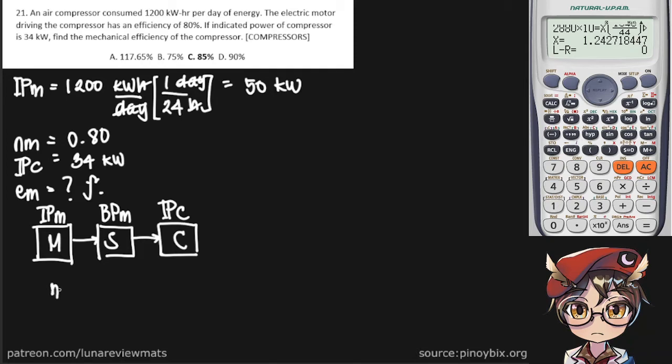Now, the mechanical efficiency is simply the output BPM over the input IPM. Similarly, the mechanical efficiency of the compressor is the output IPC over the input BPM.